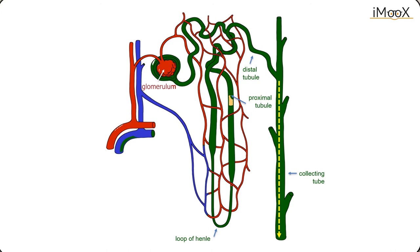The proximal convoluted tubule flows into the descending loop of Henle. In this part of the tubular system, aquaporins allow water to pass back into the interstitial fluid in the kidney tissue. Given this function, the kidneys are able to regulate fluid reuptake to the body.